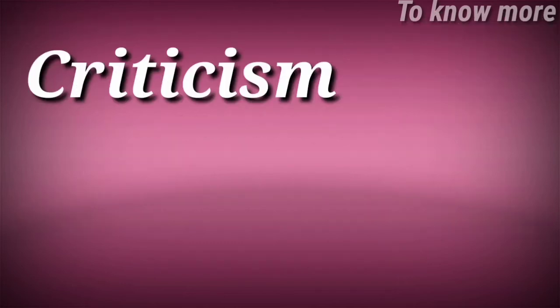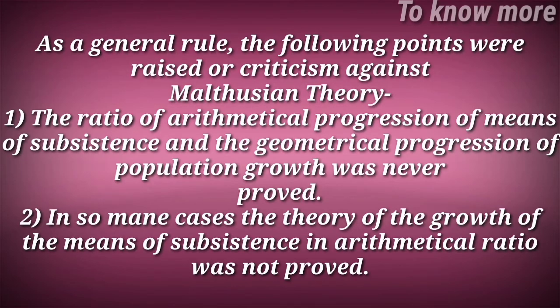Now we will discuss the criticisms or demerits of the Malthusian theory of population. First, the ratio of arithmetic progression of means of subsistence and geometrical progression of population growth was never proved. Second, in many cases the arithmetic ratio of growth of means of subsistence was not proved.